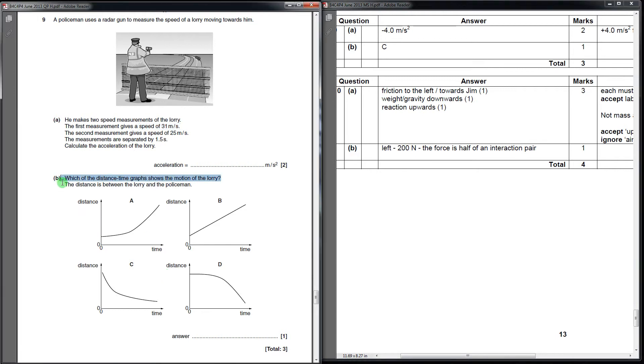It says up here in the stem of the question, the lorry is moving towards him. What that means is, because these are all distance time graphs, it has to be one of the decreasing ones. That narrows it down straight away to between C and D. Because A and B, the distance to the policeman is increasing—the lorry would be moving away from him.